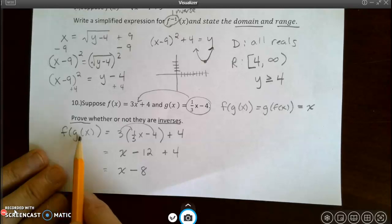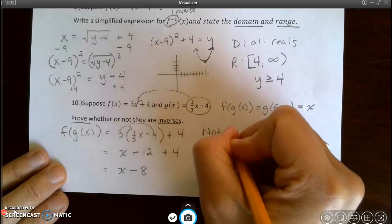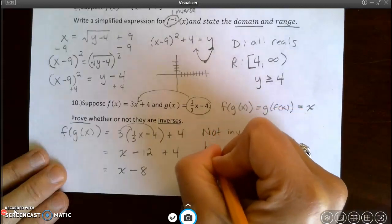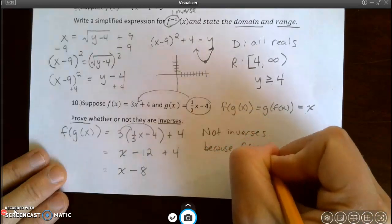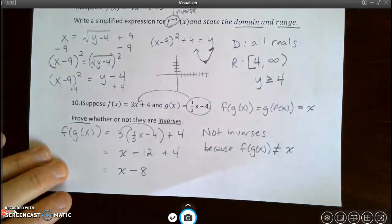As soon as I get that, I know that these are not inverses, because f at g of x did not equal x. So I say not inverses, because f at g of x did not equal x.